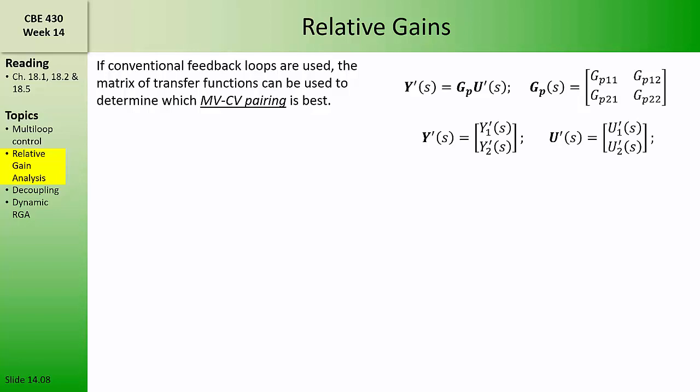In this video we will introduce a concept called the relative gain array, which is used to determine which CV-MV pairings are optimal. We'll begin by considering a two-input, two-output process which has four process transfer functions GP11, GP12, GP21, and GP22, that each describe how one of the manipulated variables affects one of the controlled variables. The relative gains describe how changing one of the manipulated variables affects one of the controlled variables at the new steady state.